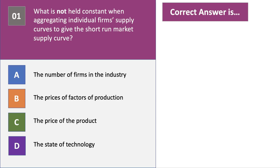So what do we think here? What's not held constant when we derive the supply curve? The answer is C, the price of the product. A, B and D are all factors causing changes in the conditions of supply — they would cause a shift in supply, not a movement along it.